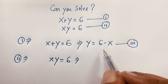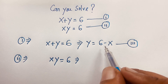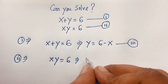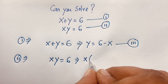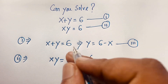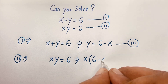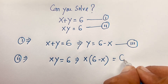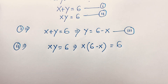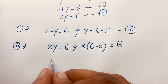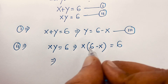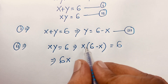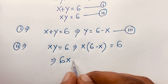Now we have y is equal to 6 minus x, so I substitute this value into the second equation. It becomes x times (6 minus x) is equal to 6. Expanding this: x times 6 gives 6x, and x times x gives x squared, and on the right we have 6.